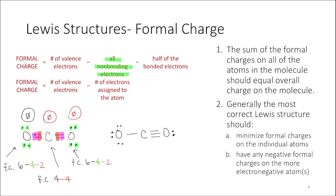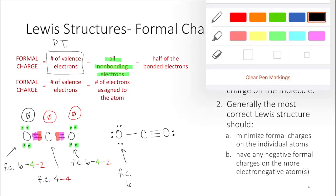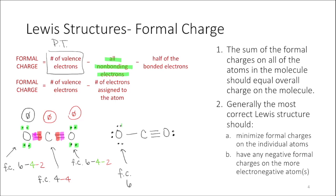Now let's consider structure two on the right. It also satisfies the octet rule and contains the correct number of valence electrons. For the first oxygen in this structure: six valence electrons minus six non-bonding electrons minus one (half the bonded electrons, since it only forms one bond). Six minus six minus one gives this oxygen a formal charge of negative one.